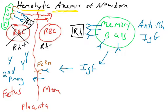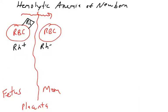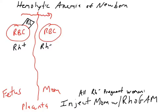It turns out we can prevent this using a drug which is an antibody. It exploits what we learned about how memory cells can suppress naive cells. If a woman is Rh negative, it is very likely that she will be given a compound called RhoGAM. All Rh negative pregnant women are injected with RhoGAM, which is a molecule that will stop the mother from making her own anti-Rh antibodies.